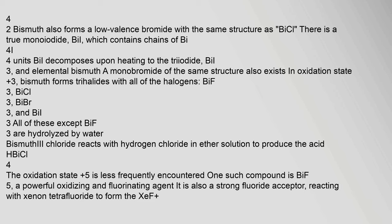There is a true monoiodide, BiI, which contains chains of Bi₄I₄ units. BiI decomposes upon heating to the triiodide BiI₃. In oxidation state 3, bismuth forms trihalides with all of the halogens: BiCl₃, BiBr₃, and BiI₃. All of these except BiCl₃ are hydrolyzed by water. Bismuth(III) chloride reacts with hydrogen chloride in ether solution to produce the acid HBiCl₄. The oxidation state 5 is less frequently encountered. One such compound is BiF₅, a powerful oxidizing and fluorinating agent, and also a strong fluoride acceptor.